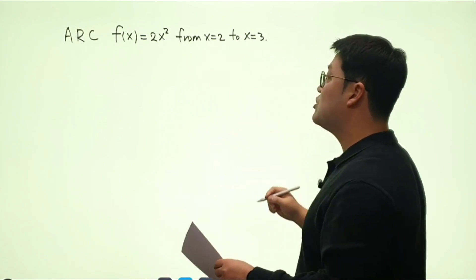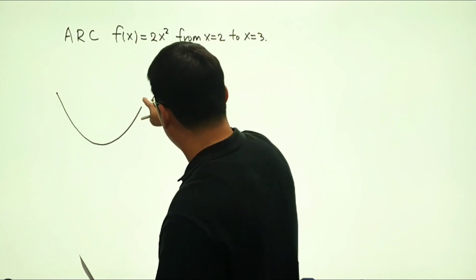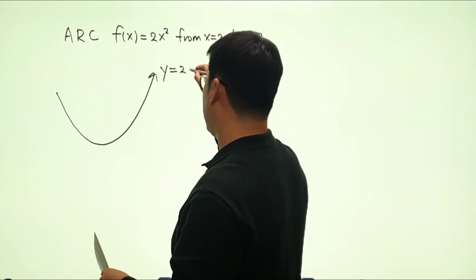So can we sketch the graph of f of x? I think we can sketch it, just a broad shape of the graph. And that looks like y equals 2 times x squared.